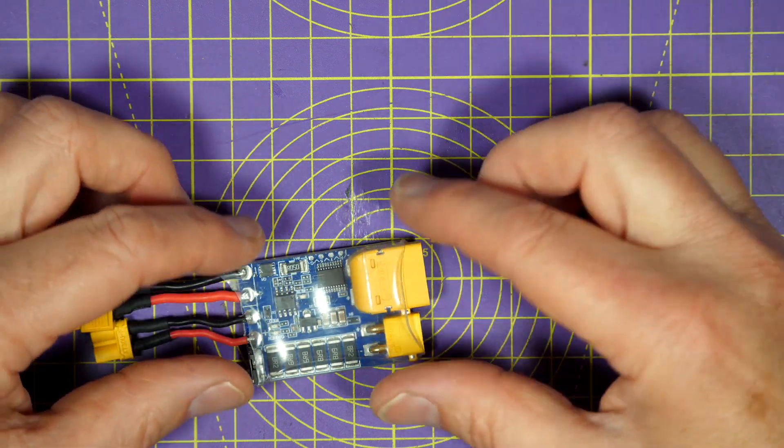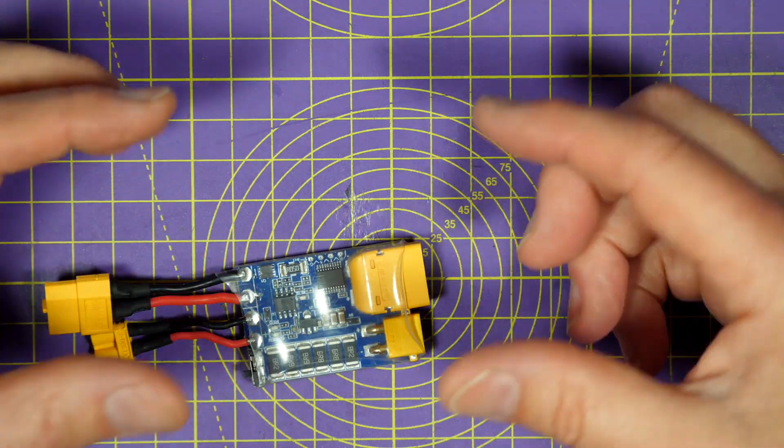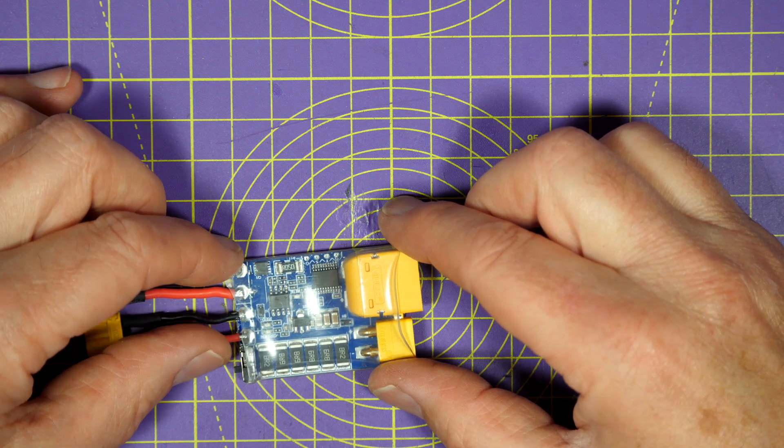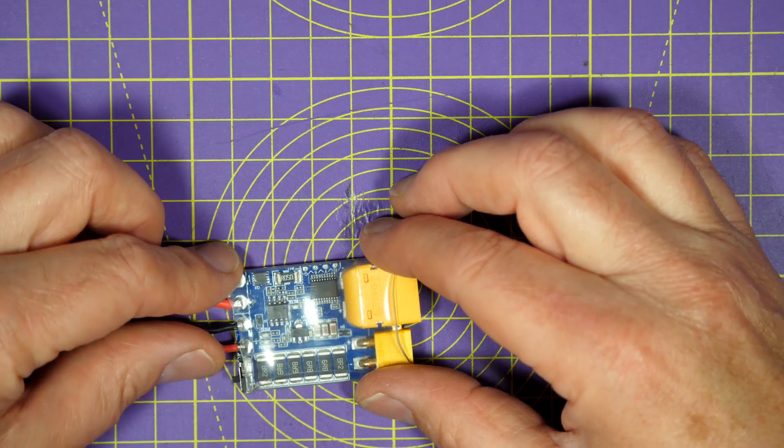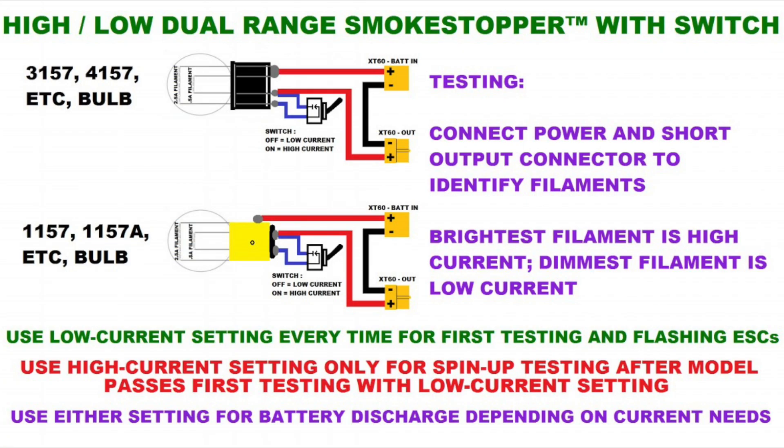If there's a short circuit or a wiring problem on the quad, the bulb very quickly limits the current and converts all that power into heat and light. Basically the bulb comes on. This was devised about five years ago on the RC Groups forum and you'll find loads of YouTube videos about it.